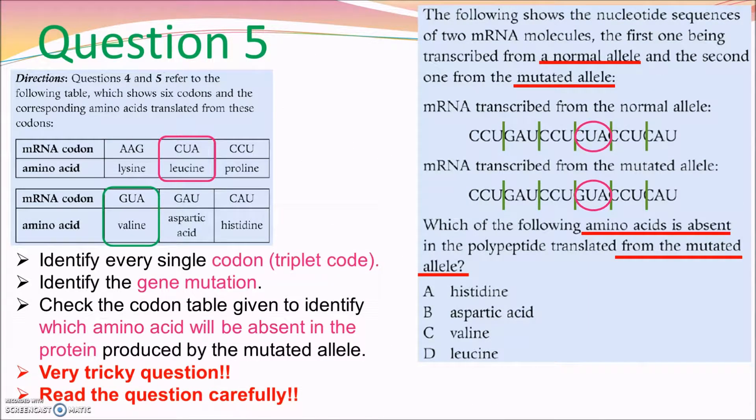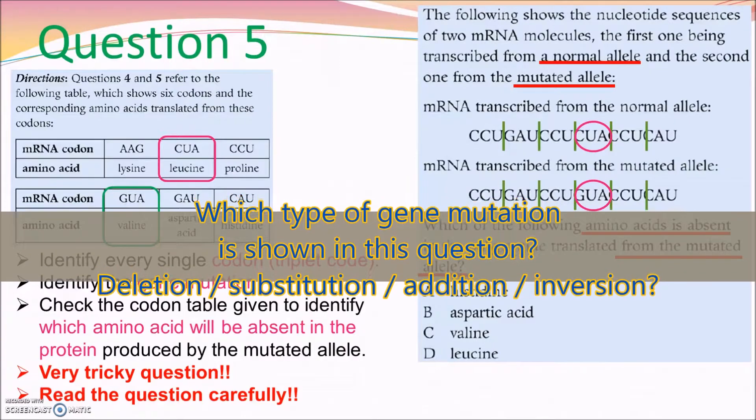In question 5, it asks about the gene mutation. Two mRNA strands are given. One is transcribed from the normal allele, and the other from the mutated allele. We call the non-overlapping feature of codon. The triplet codons are read separately. So, what you need to do is to separate all the codons first, especially if you are not that familiar with the question. Then, you need to locate the mutation. As we see, the fourth codon is changed from CUA to GUA.